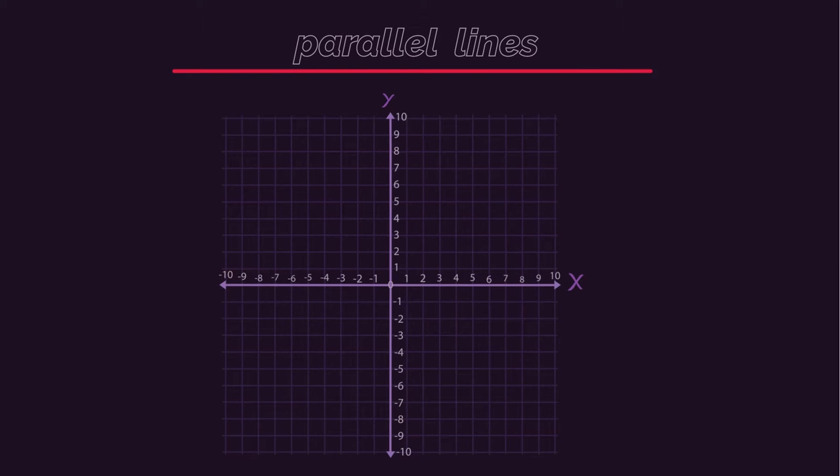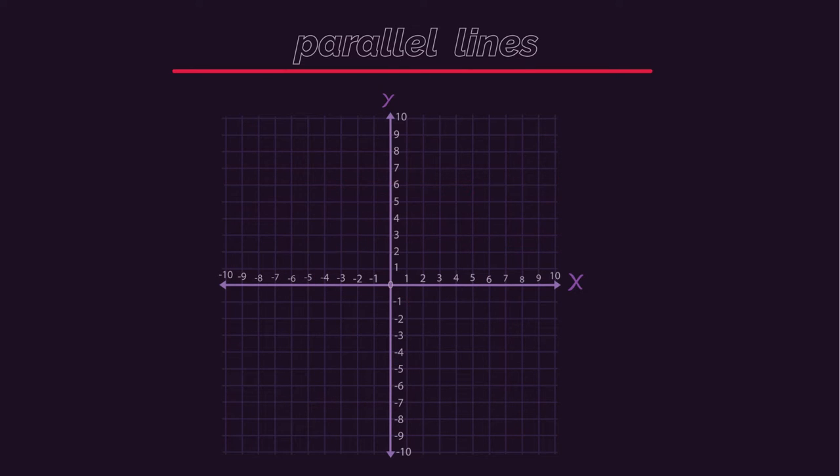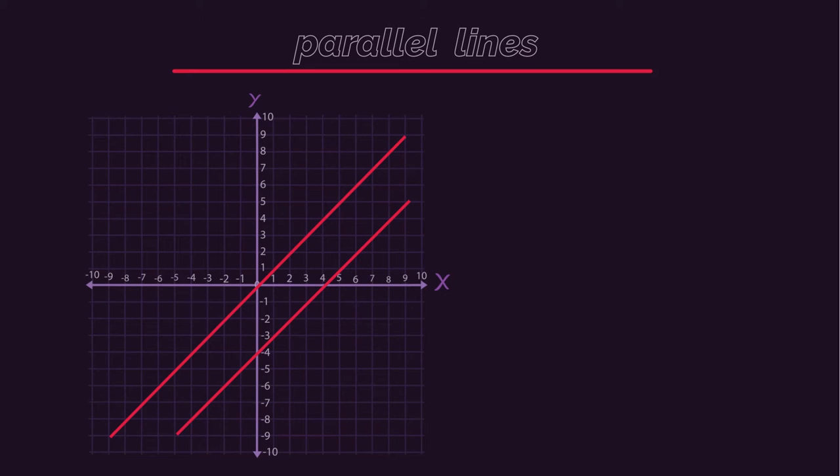And on a graph they look like this, or like this, or even just like this. Notice how parallel lines have the same steepness. This is known as the gradient, which we will look at a lot in future videos.